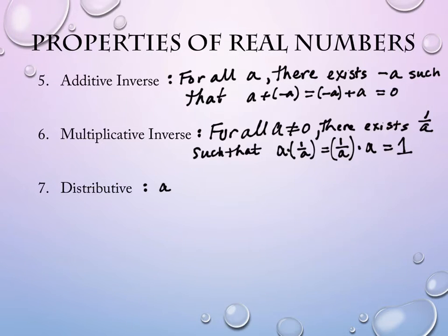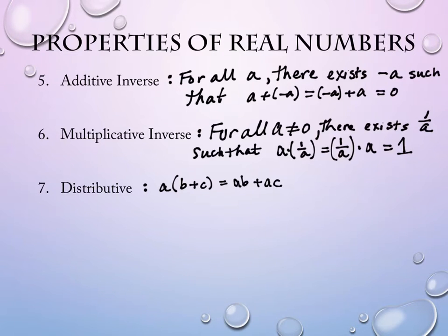The distributive property combines multiplication and addition, or multiplication and subtraction. It says if I have A times B plus or minus C, this is equal to A times B plus or minus A times C. Sometimes people draw arrows to visually show that A value being distributed through the parentheses.